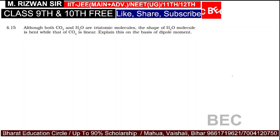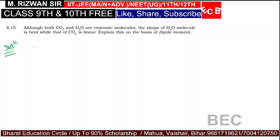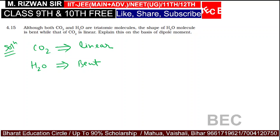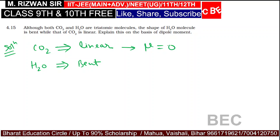Although both CO2 and H2O are triatomic molecules, the shape of H2O molecule is bent while that of CO2 is linear. Explain this on the basis of dipole moment. CO2 is linear and H2O is bent. According to experimental results, the dipole moment of CO2 is zero because the molecule is linear.